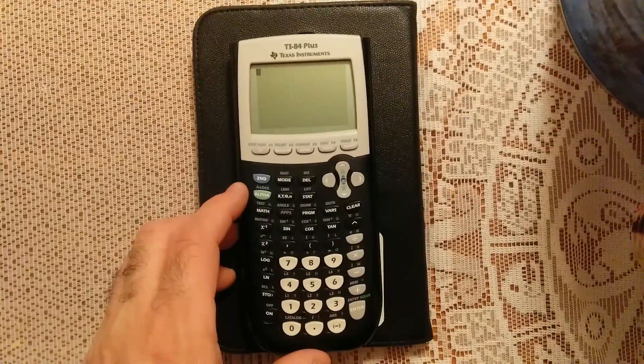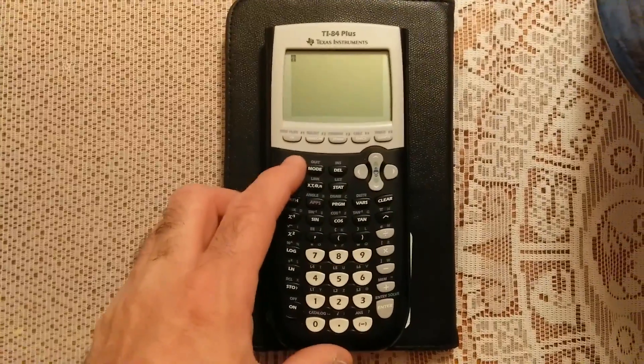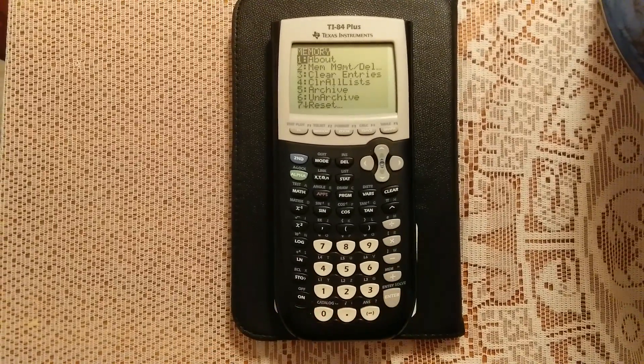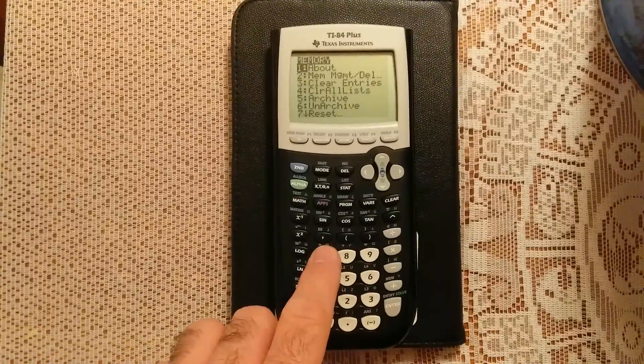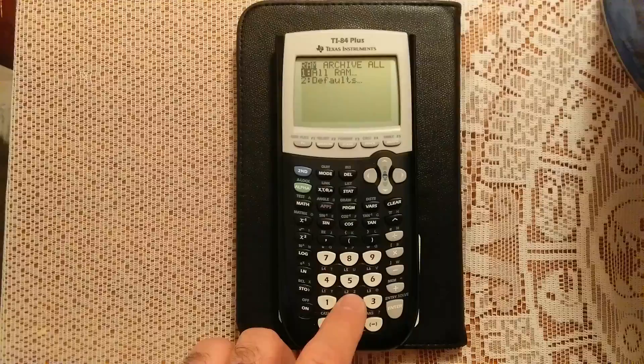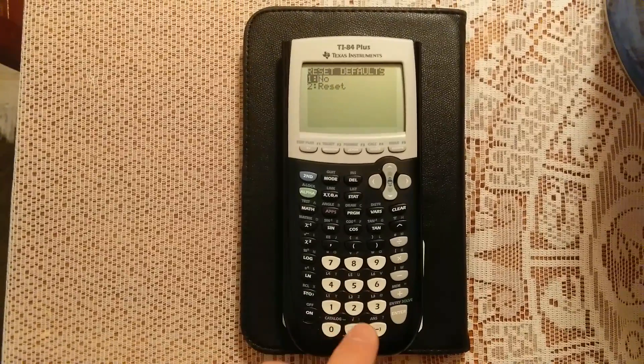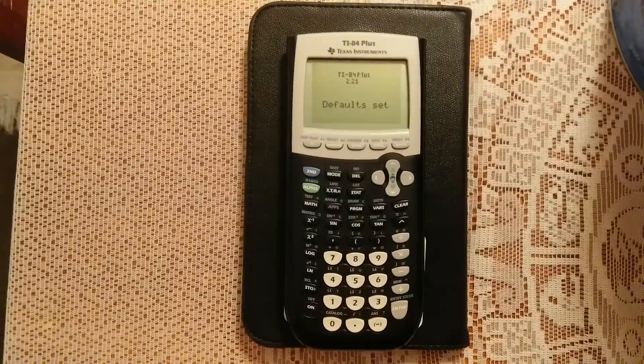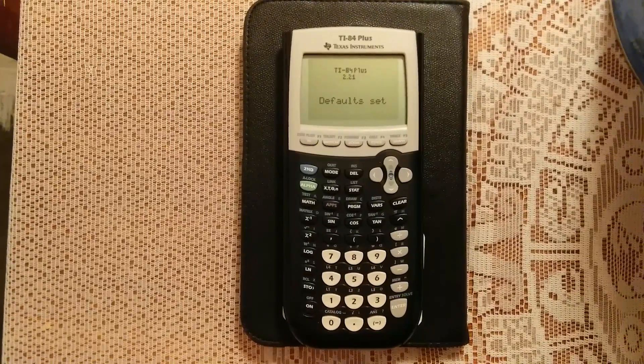what you're going to do is go to Second, go to Memory, then go to number seven to reset. We're going to pick number two, defaults, and then we're going to pick number two again, and that will reset your graphing calculator to the factory defaults.